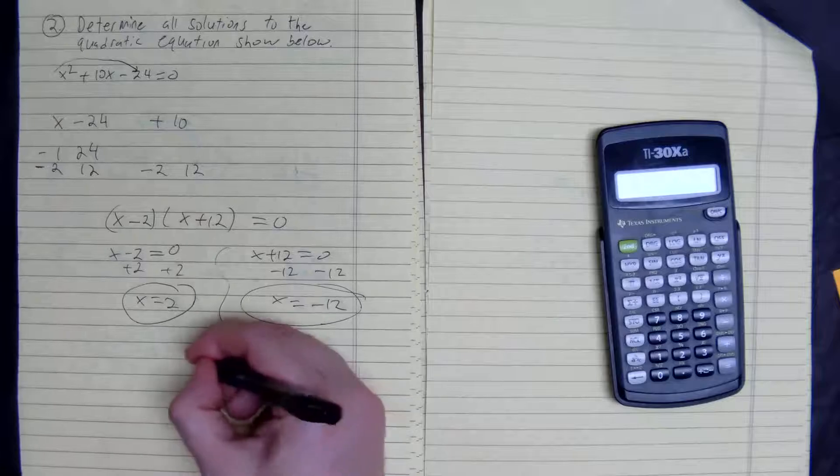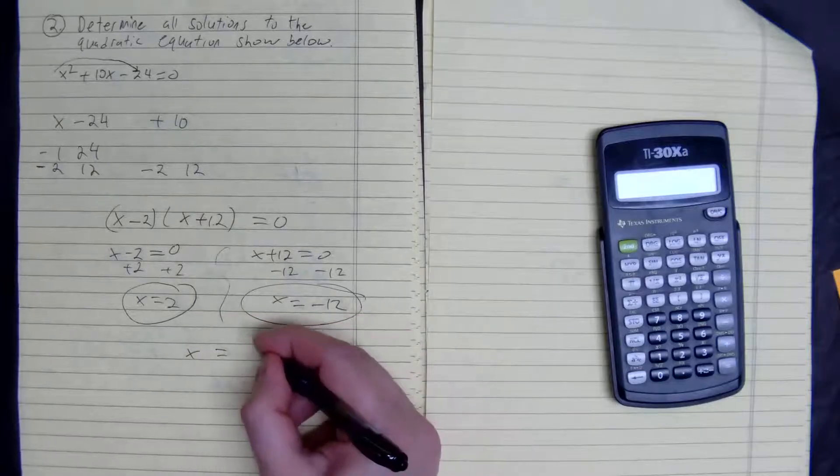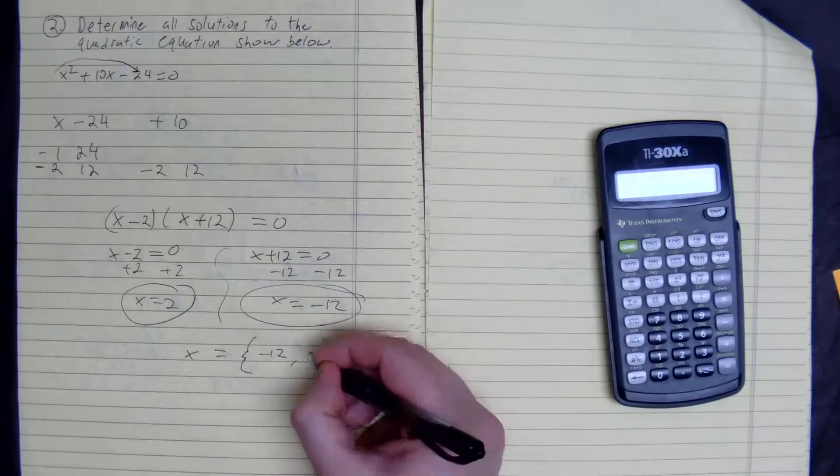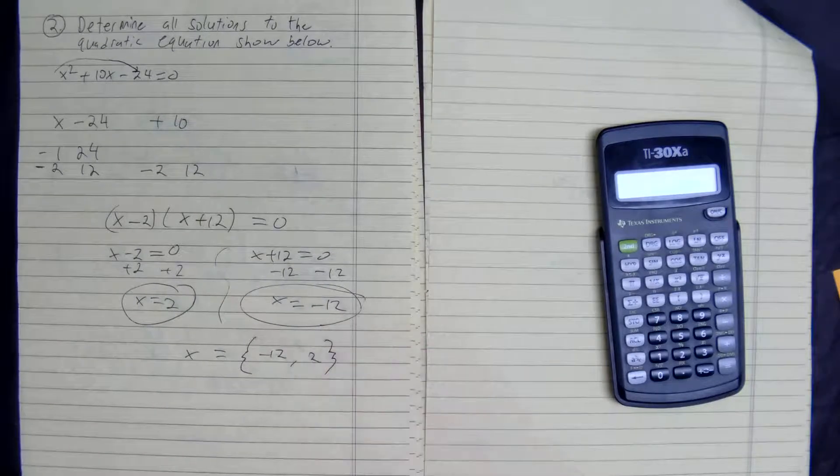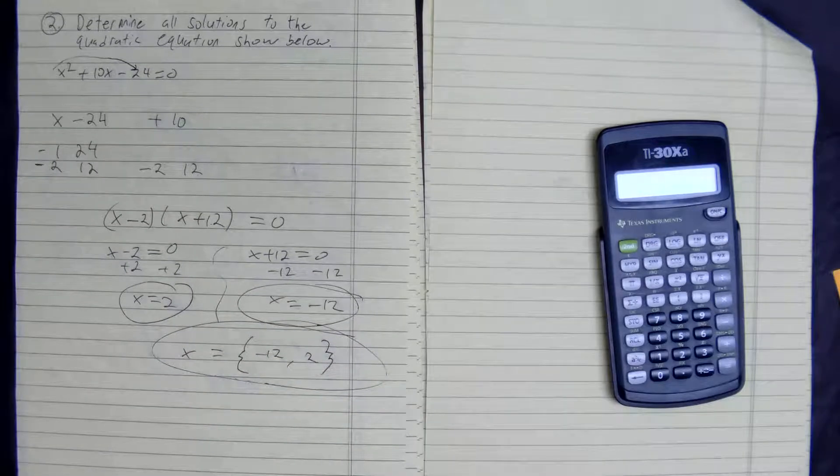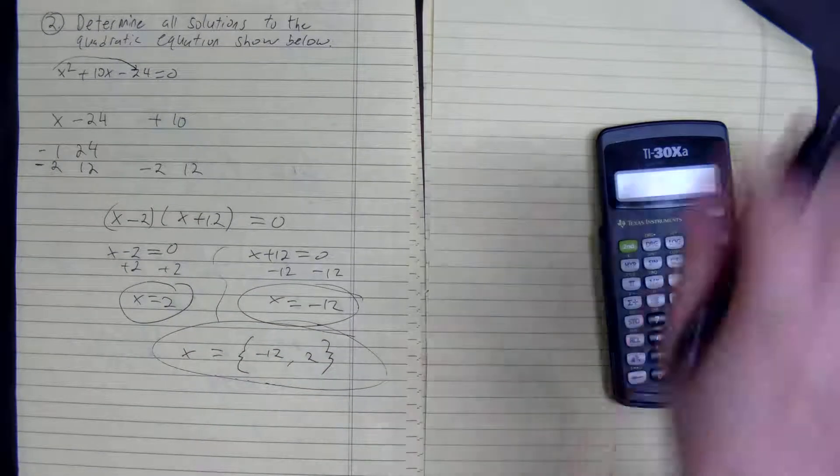So our solution set is X is equal to negative 12 and 2. All right. There we go. That's our answer.